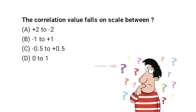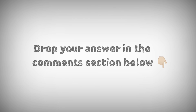The correlation value falls on a scale between: A: plus 2 to minus 2, B: minus 1 to plus 1, C: minus 0.5 to plus 0.5, D: 0 to 1. Drop your answers in the comment section below.